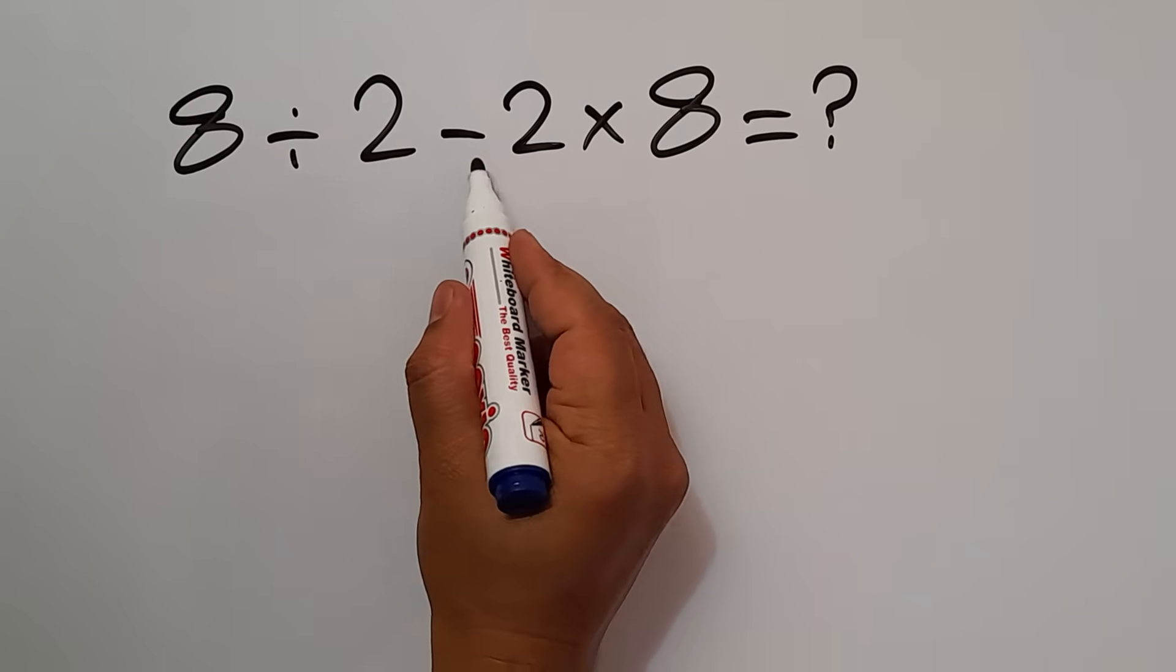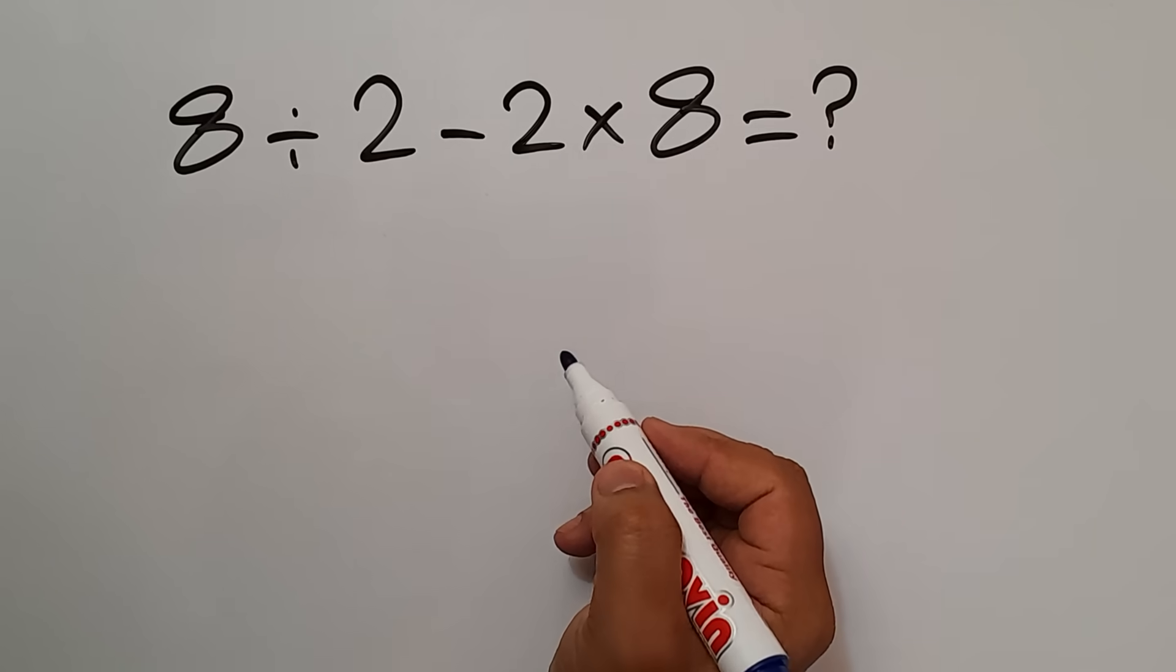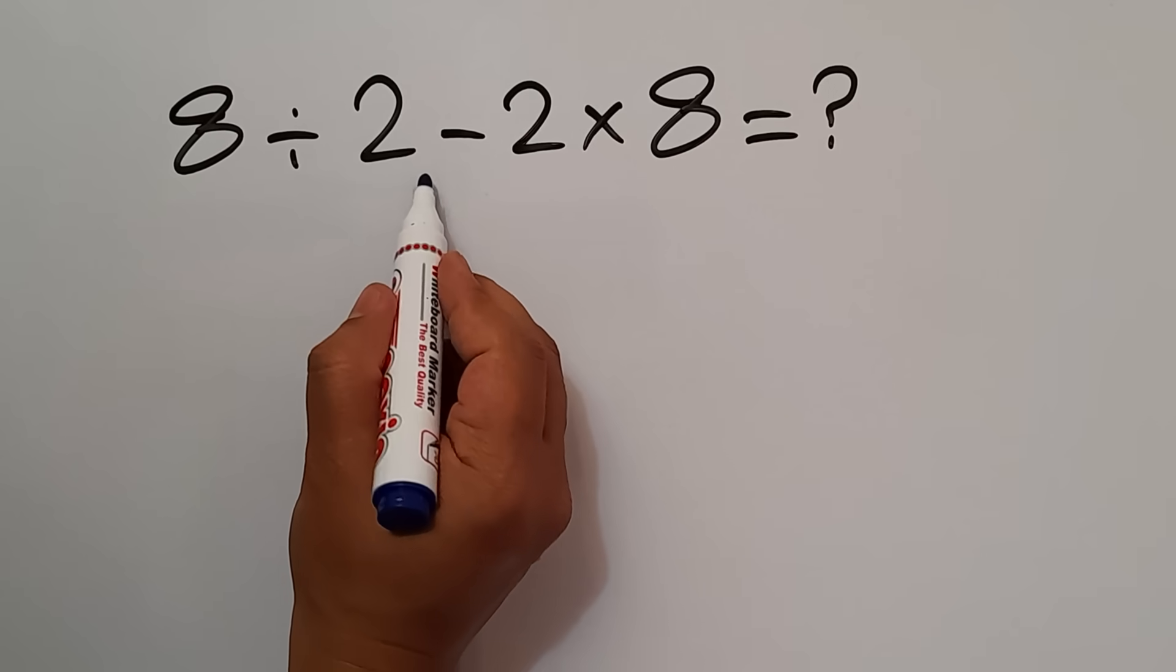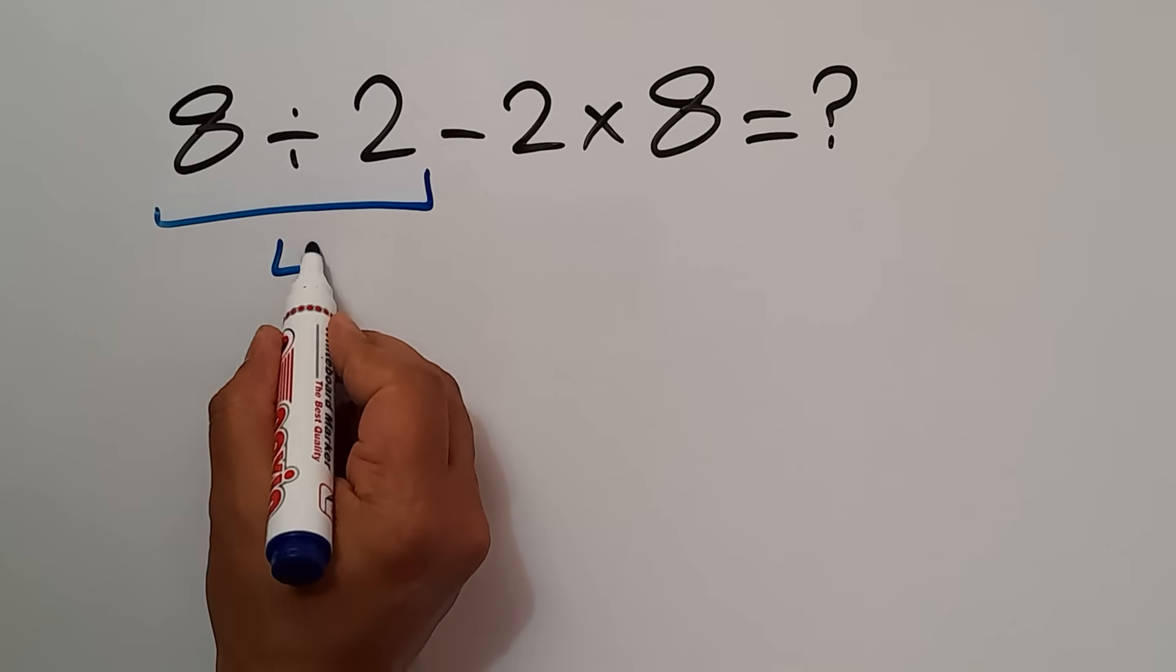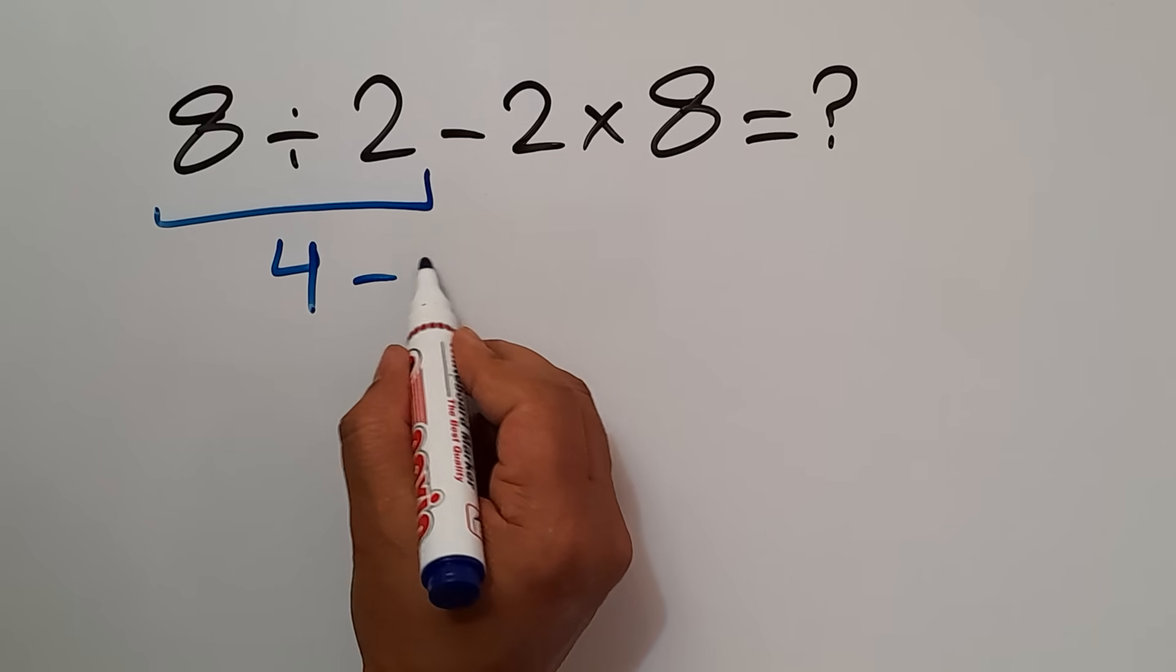8 divided by 2 minus 2 then times 8. 8 divided by 2 gives us 4, so 4 minus 2.